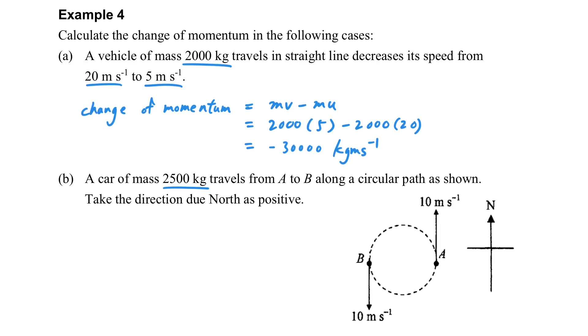How about this? If we travel from A to B along a circular path as shown. If we take the north as positive, what will be the change of momentum? mv minus mu, the final one is B. So we consider the point B momentum as the final momentum and then minus the initial momentum. So once again, we will obtain a negative value of momentum here.